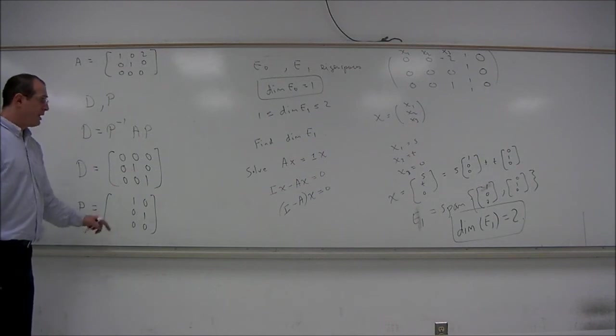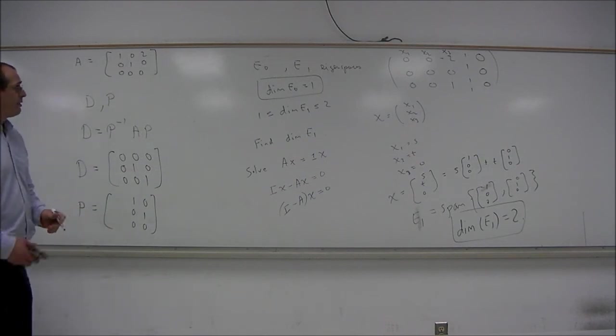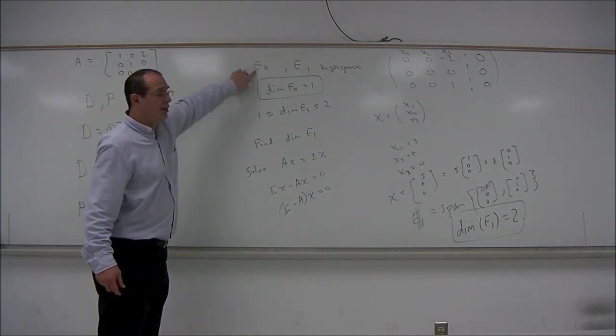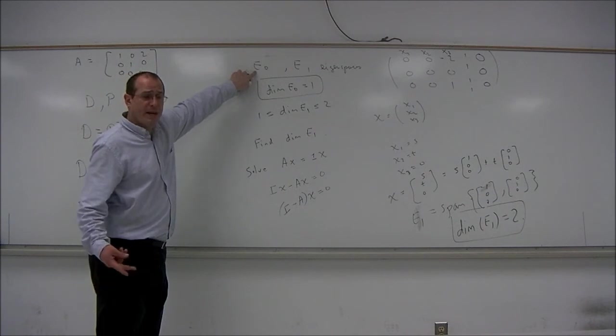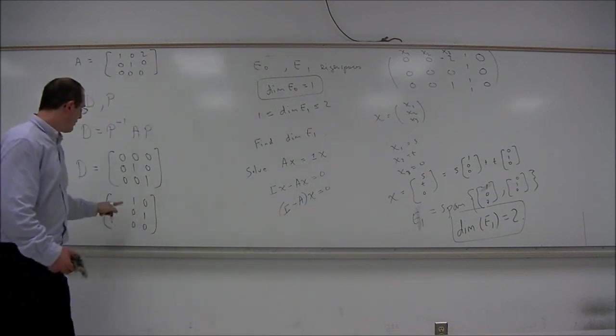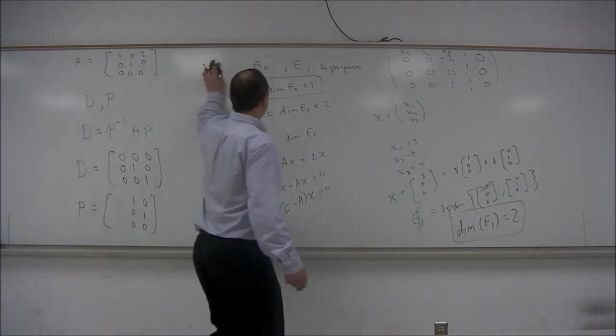So we still have a column missing. If we want to go back and figure out the eigenspace E0, this is going to be a span of one vector. We could take that one vector and put it in here. So why don't we go ahead and do that?